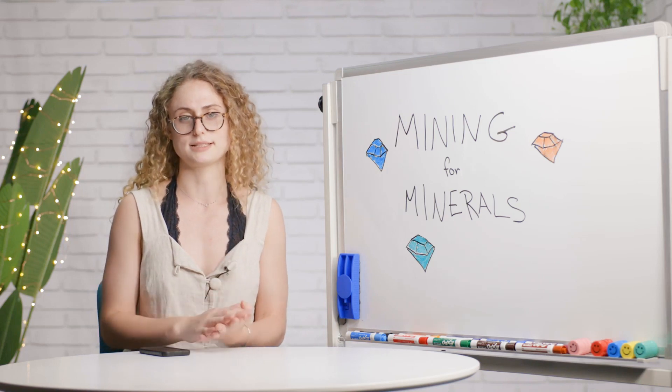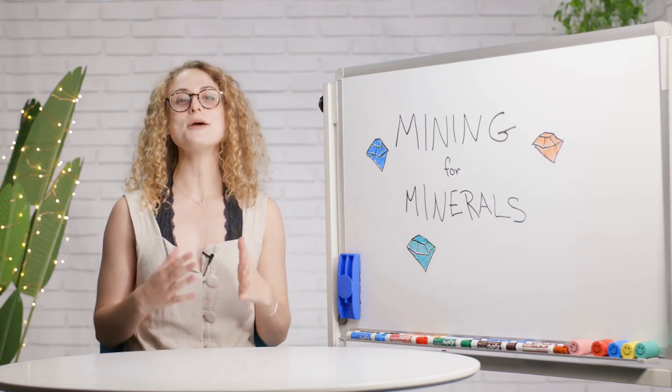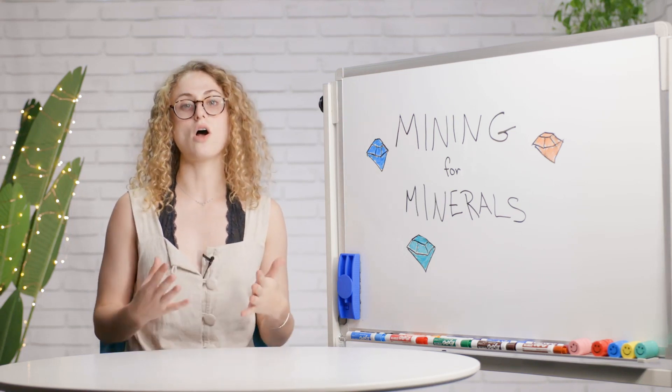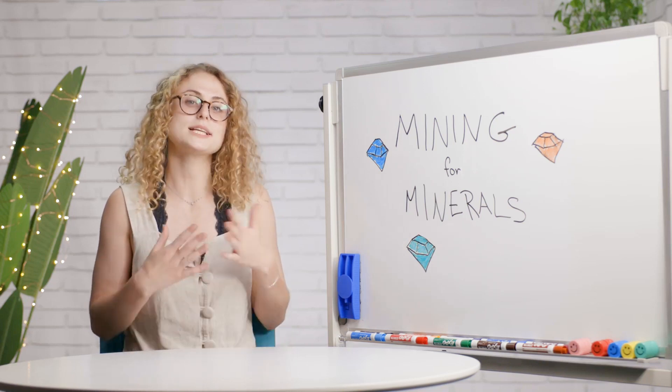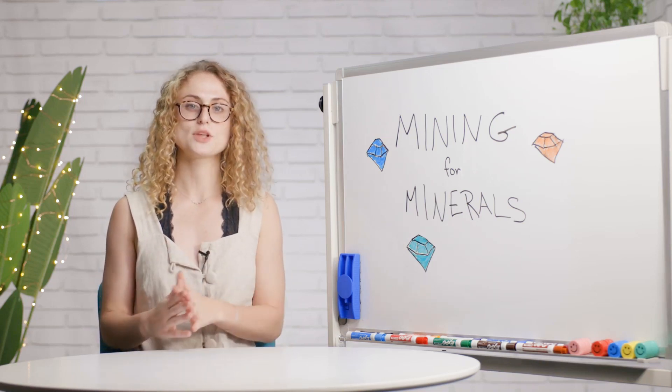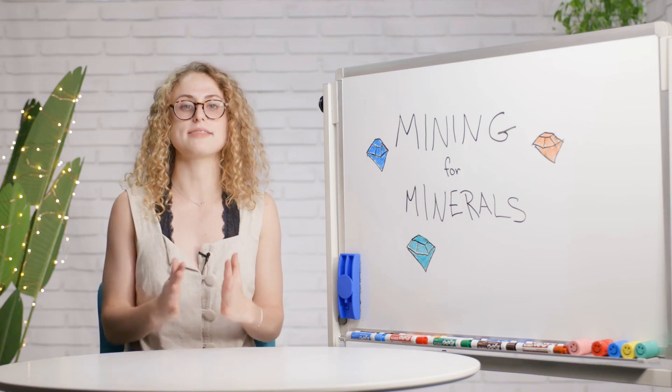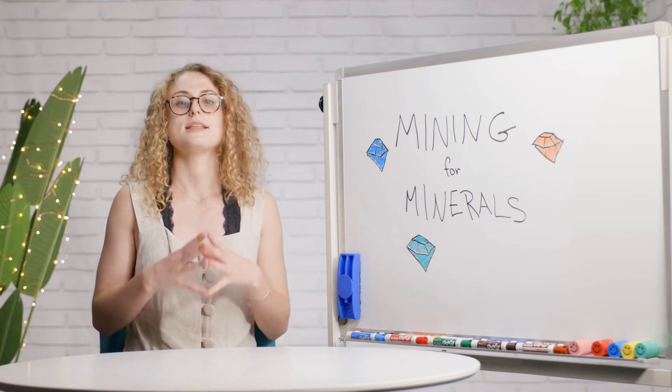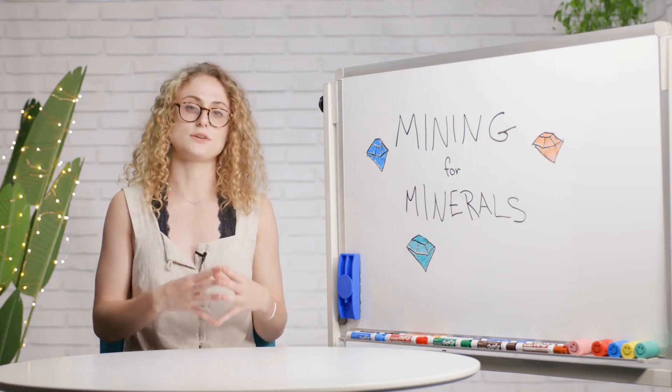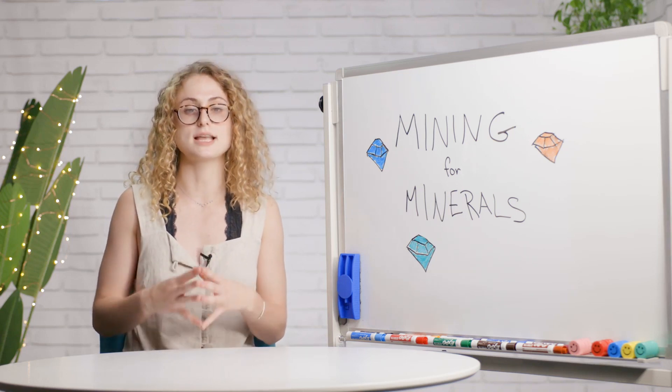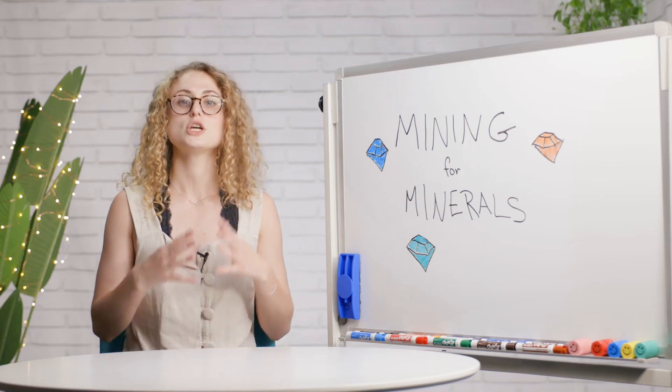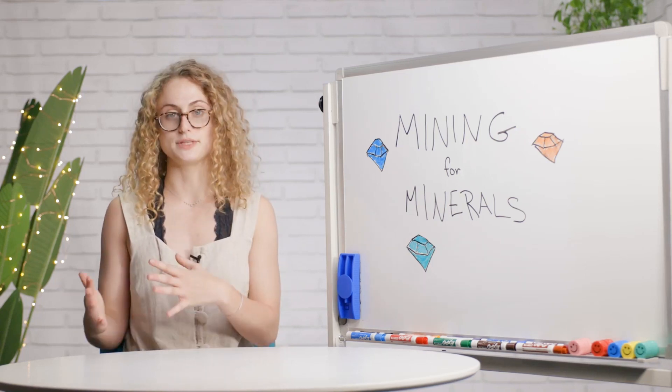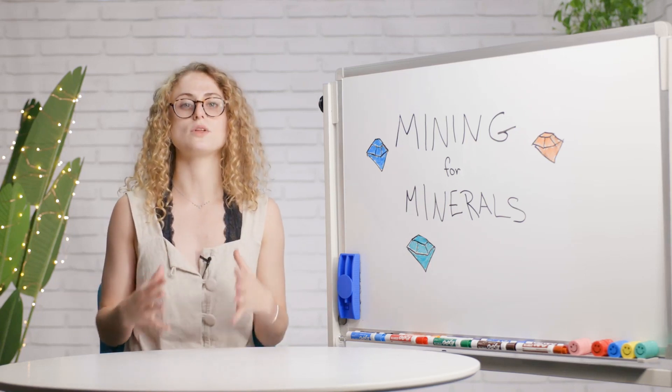Now that we understand what minerals are and why they are important, let's explore how they're obtained. Surface mining is the method of extracting minerals near the surface of the earth. This requires the removal of surface materials to retrieve the desired minerals. Strip mining, a type of surface mining, requires the removal of rock and soil to successfully extract the resources.